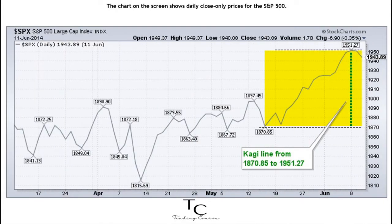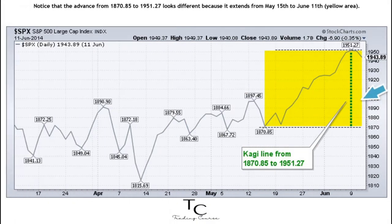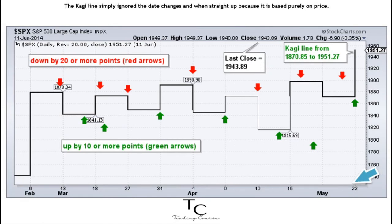The chart under the Kagi chart shows daily close-only prices for the S&P 500. Notice that the advance from 1870.85 to 1951.27 looks different because it extends from May 15th to June 11th, the yellow area. The Kagi line simply ignored the date changes and went straight up because it is based purely on price. This price focus means the X-axis date range will be different and irregular.